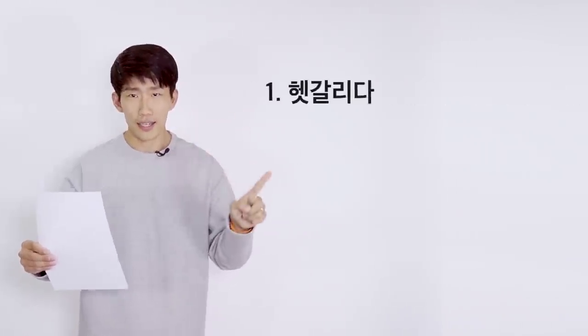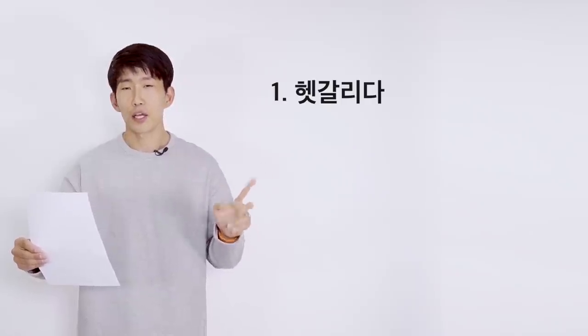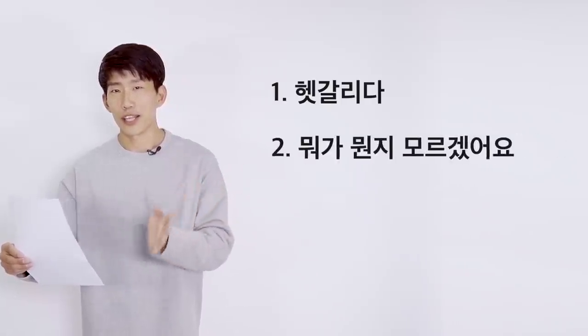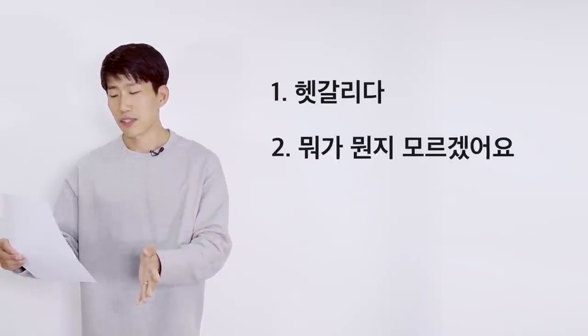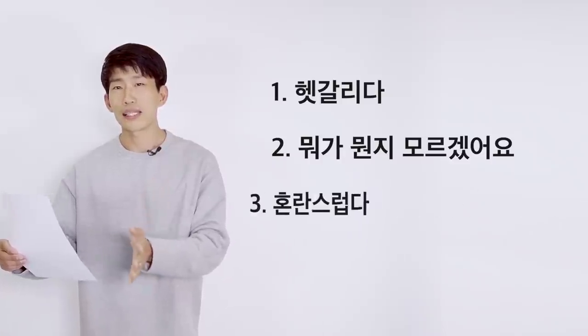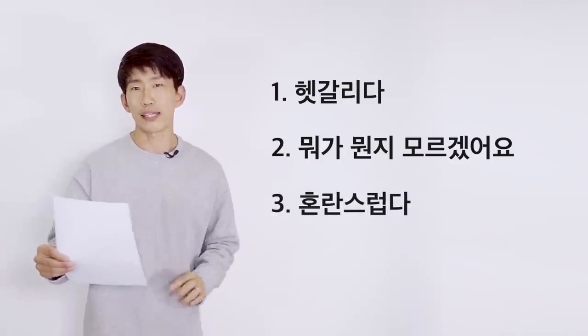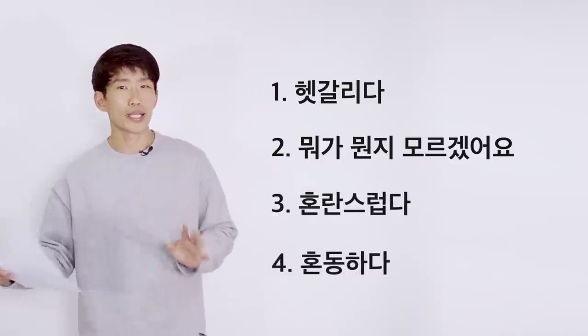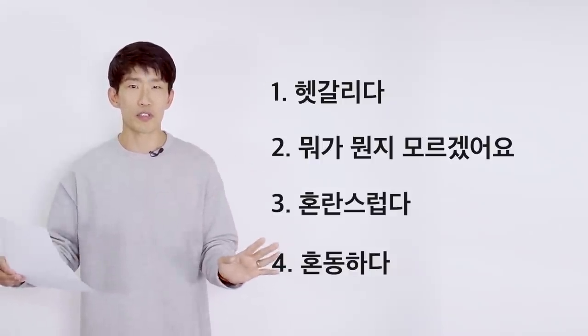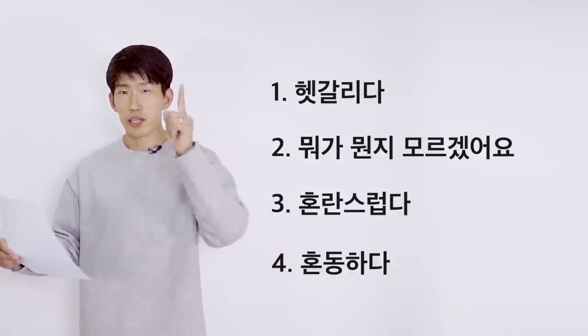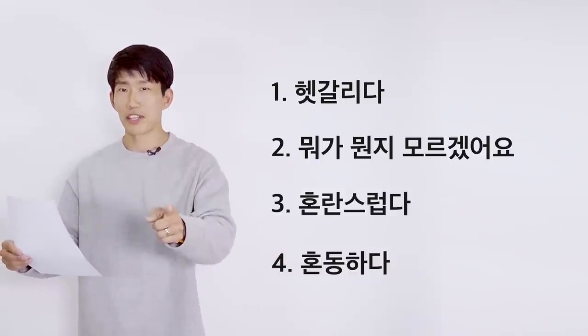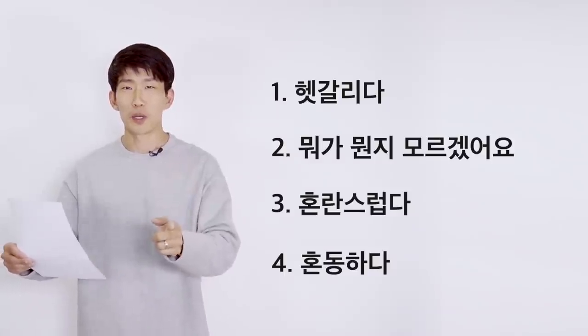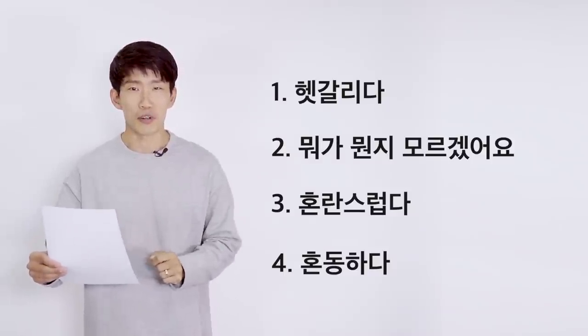So the four main expressions I've prepared for you are: 헷갈리다, and 뭐가 뭔지 모르겠어요. The third one is 혼란스럽다, and the fourth one is 혼동하다. If any one of these expressions is new to you, keep watching until the end. You will learn something new. 뭔가 새로운 걸 배울 수 있을 거예요.